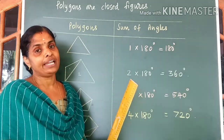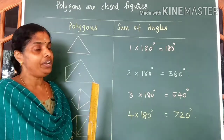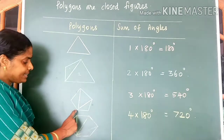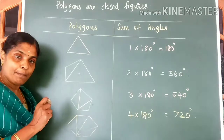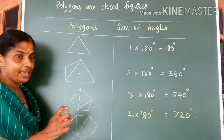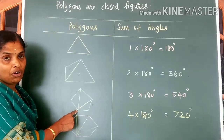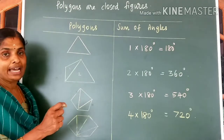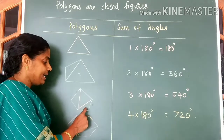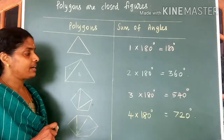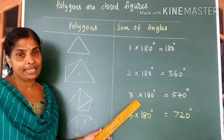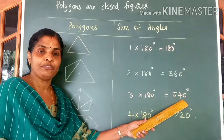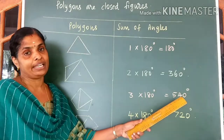A five-sided closed figure is called a pentagon. I have drawn a pentagon here. Now again from one vertex, I have drawn diagonals to the opposite vertices so that this pentagon is divided into three triangles. So the sum of angles of a pentagon is 3 into 180, which is equal to 540 degrees.